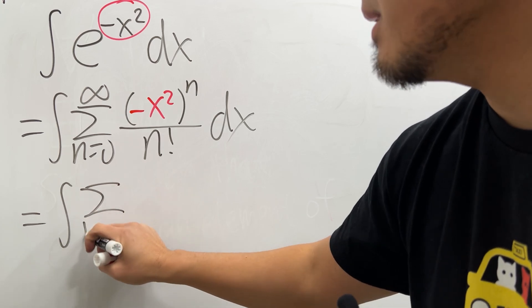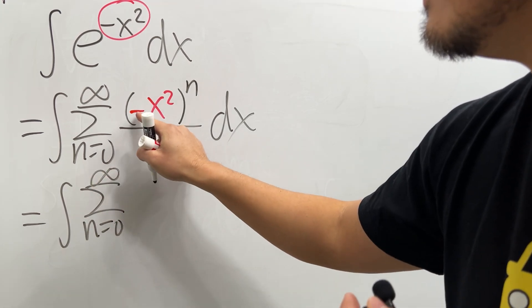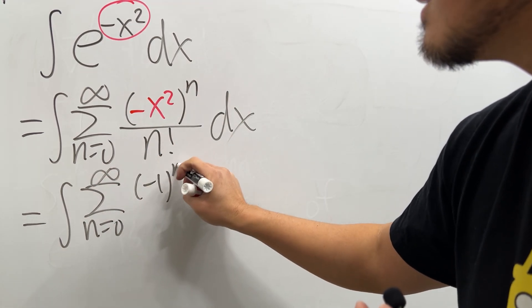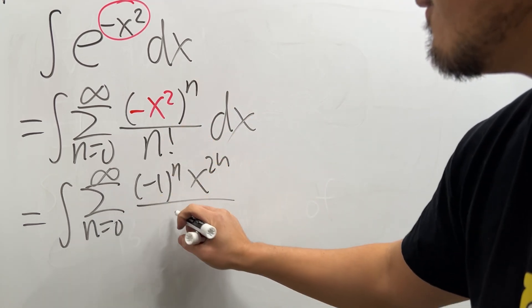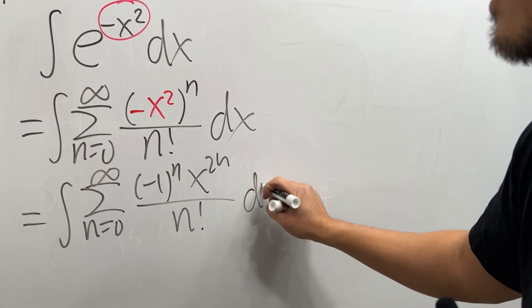Now clean this up a little bit. This is the integral and then we have the sum as n goes from zero to infinity, negative one to the n's power, and then x to the 2n's power over n factorial, and then we still have the dx.